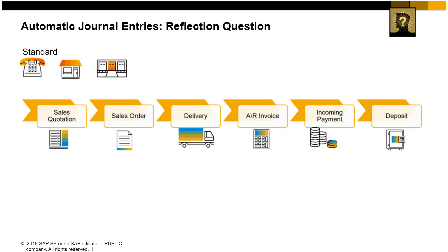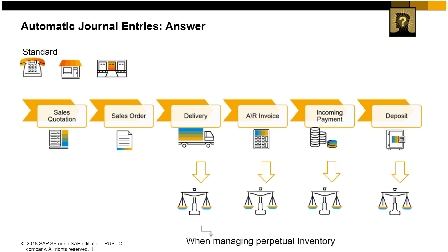In other topics, we learned about the documents in the sales process and their consequences on bookkeeping. To review this process, let us answer the following question: in a standard sales process, which documents affect the accounting system? These are the documents in the sales process that create automatic journal entries and therefore affect the accounting system: the delivery, the AR invoice, the incoming payment, and the deposit. Note that the delivery only creates an accounting posting if you are using perpetual inventory.